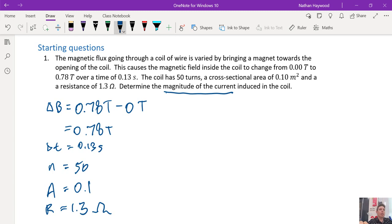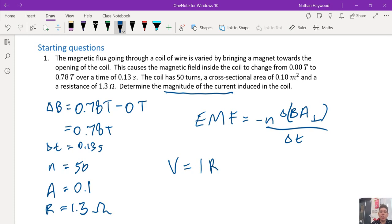So what formulas? EMF equals... EMF is measured in volts. So what's also measured in volts? Voltage. Voltage is equal to current times resistance. So we can make them equal to each other.